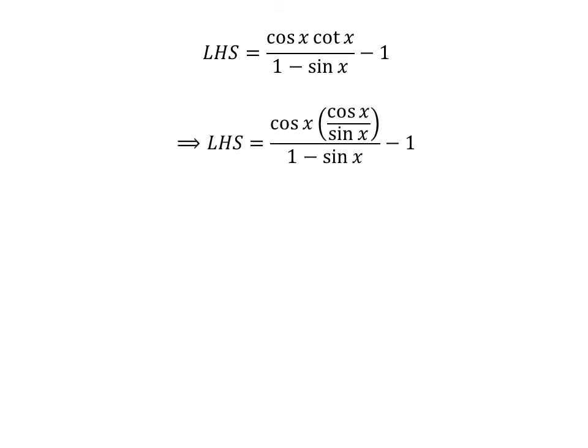We know cotangent of x is equal to cosine of x upon sine of x. So the left hand side is equal to cosine of x times cosine of x upon sine of x, all upon 1 minus sine of x, minus 1.